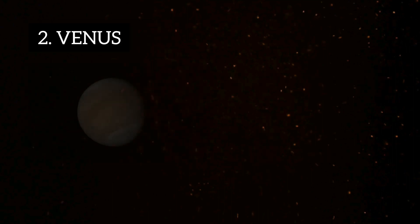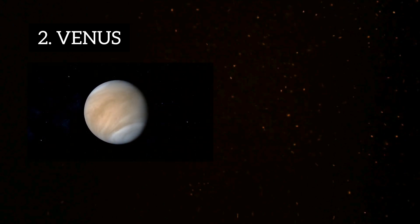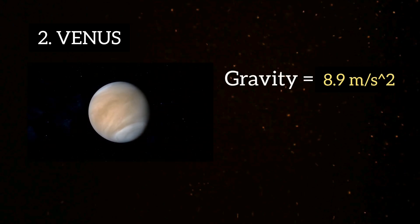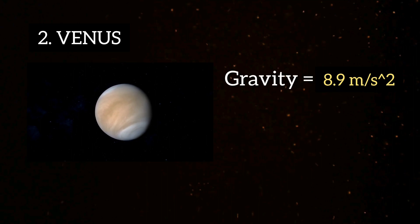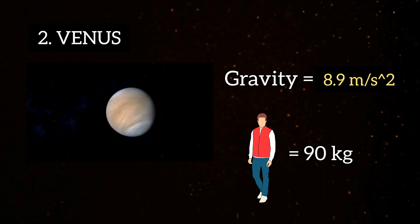Second, Venus, the hottest planet of our solar system, has a gravity of around 8.9 meters per second square, which is 0.9 times the Earth. So, the person's weight will be around 90 kg on Venus.